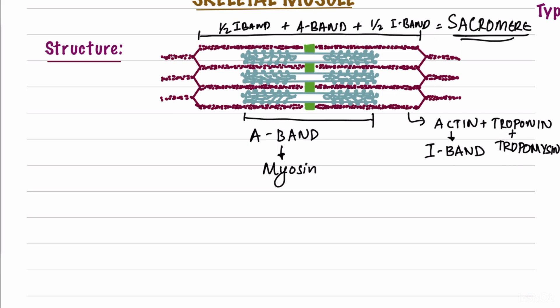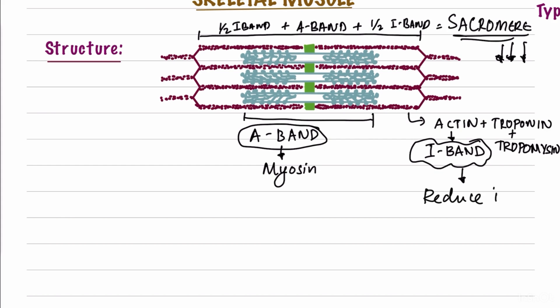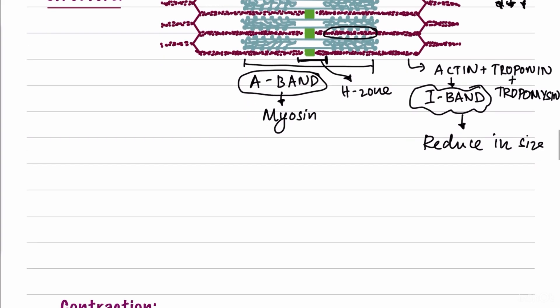Contraction occurs at the level of the sarcomere — when a muscle contracts, the length of the sarcomere decreases. The A-bands remain constant during contraction while the I-bands reduce in size. The H-zone is the region where the I-bands do not overlap the A-band; only the A-band is present there. In other regions, there is overlap between I-bands and A-bands.